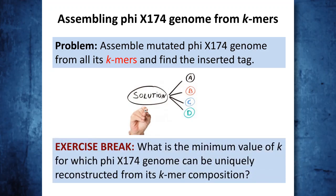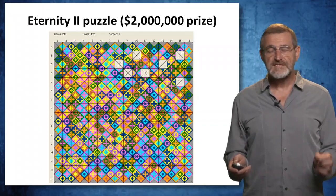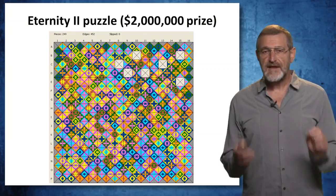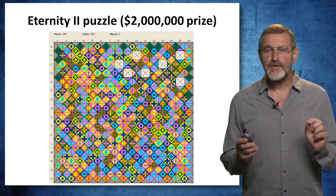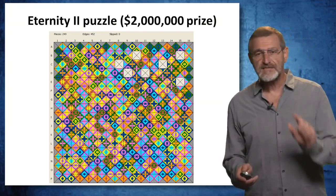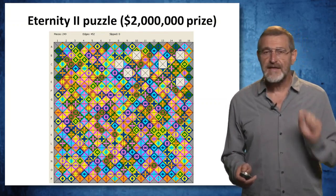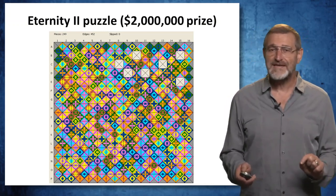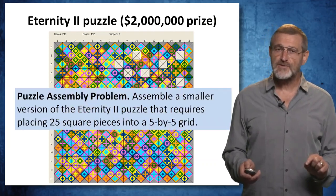The exercise break I recommend is to answer the following question: what is the minimum value of k for which the phage genome can be uniquely reconstructed from its k-mer composition? This is another example of a rather complex puzzle with repeated pieces. In fact, there was a $2 million prize announced for the solution of this puzzle, but the puzzle remains unsolved to this day. What you see on this slide is actually not a solution because there are seven empty pieces that nobody was able to place yet. It is called the Eternity 2 puzzle.